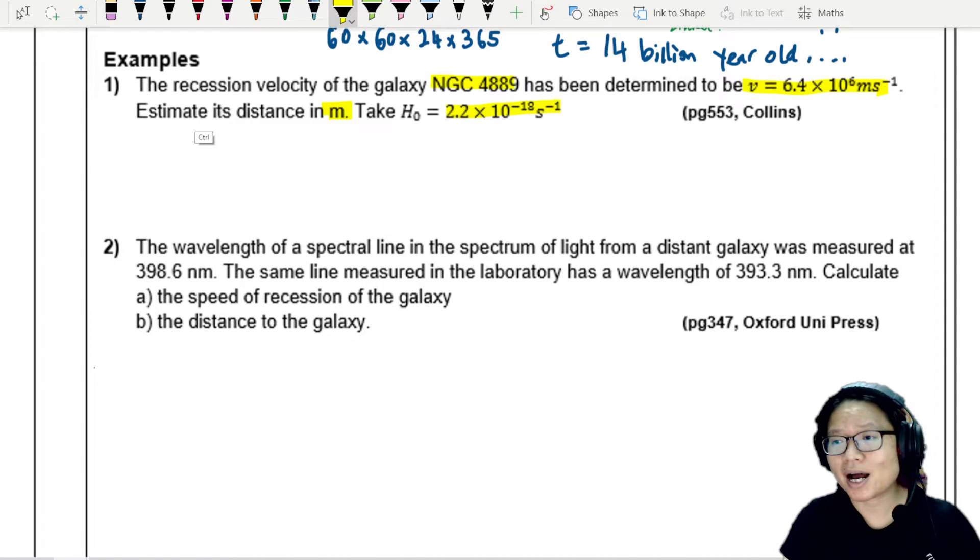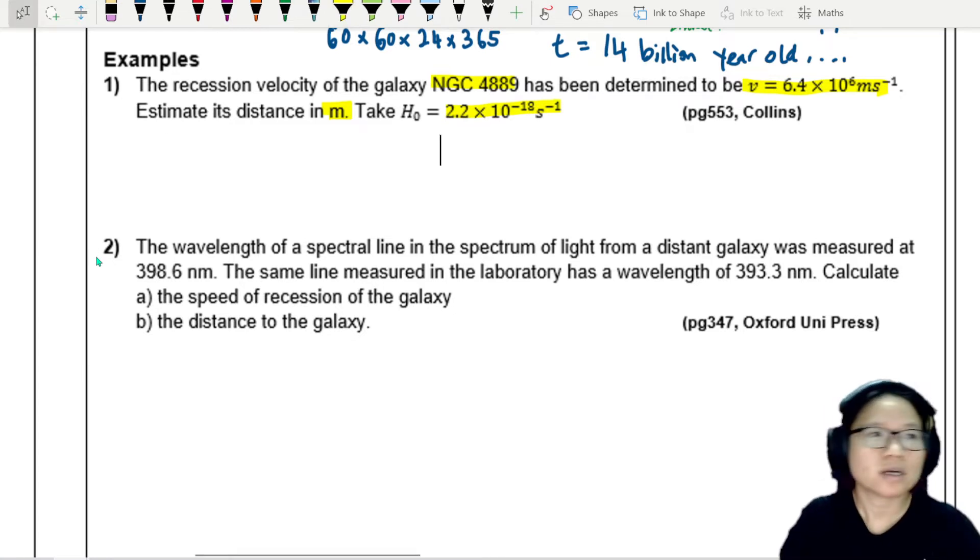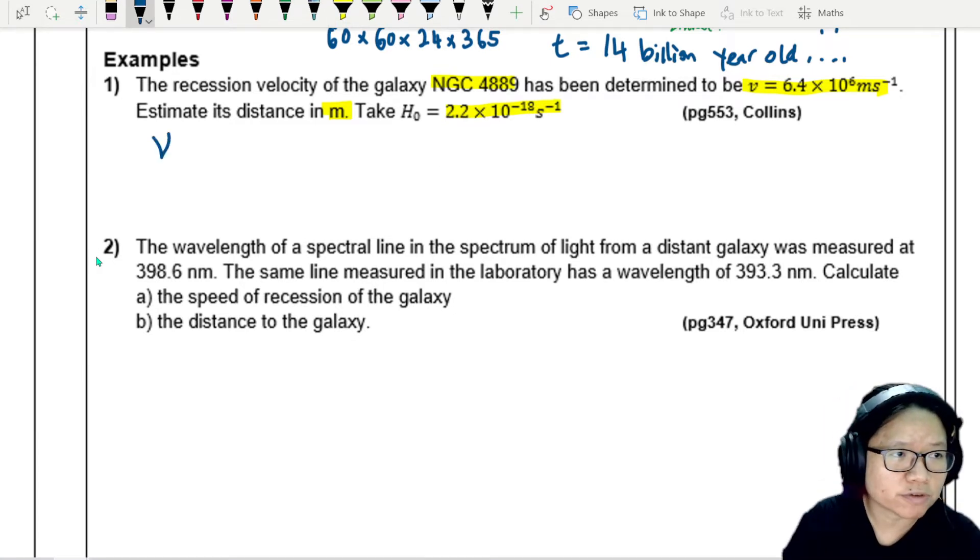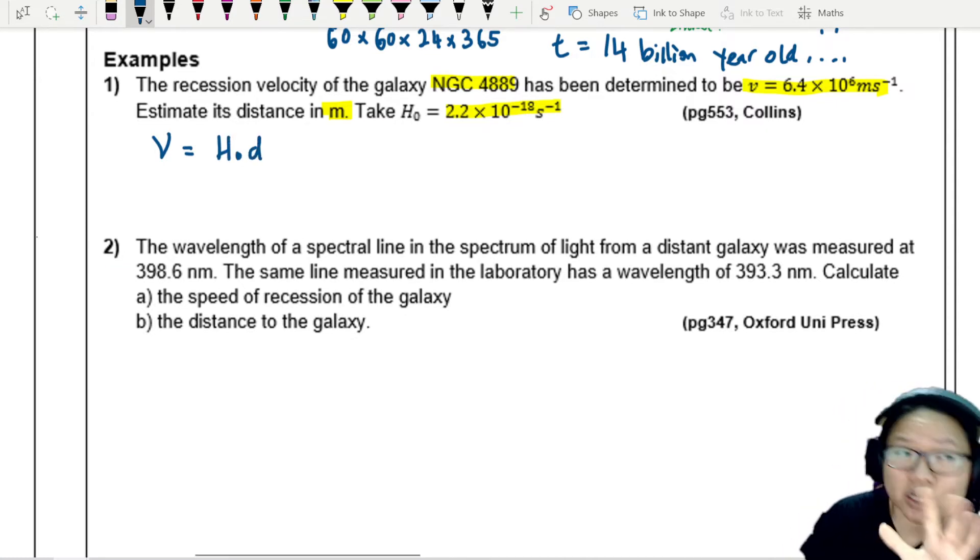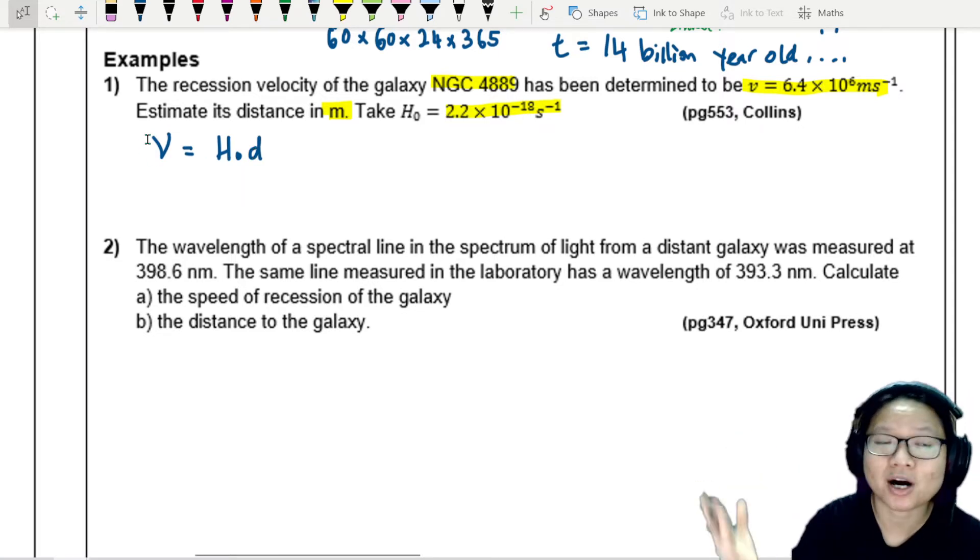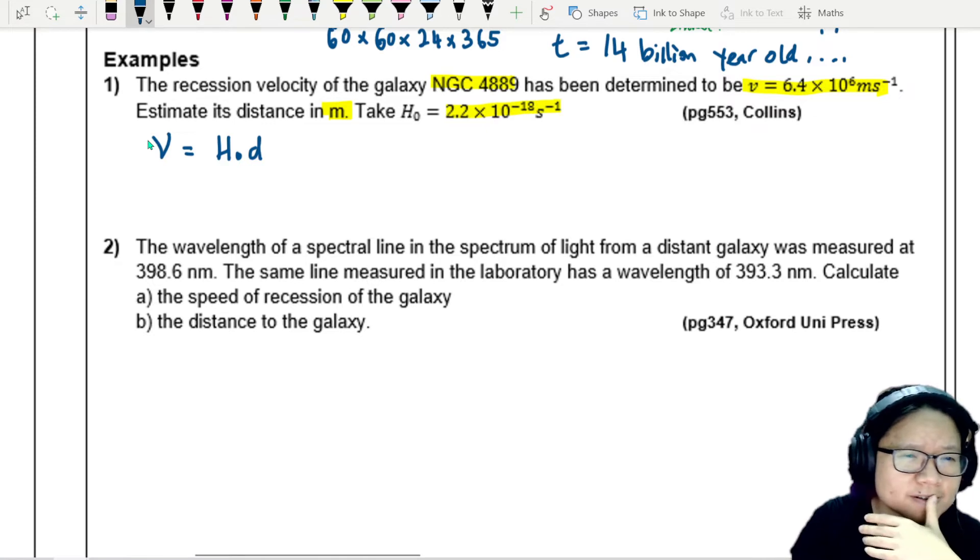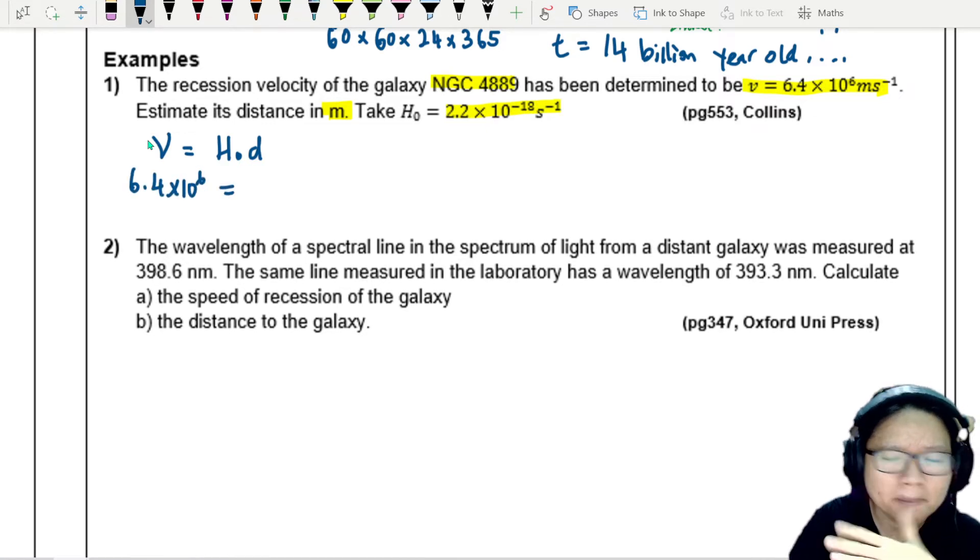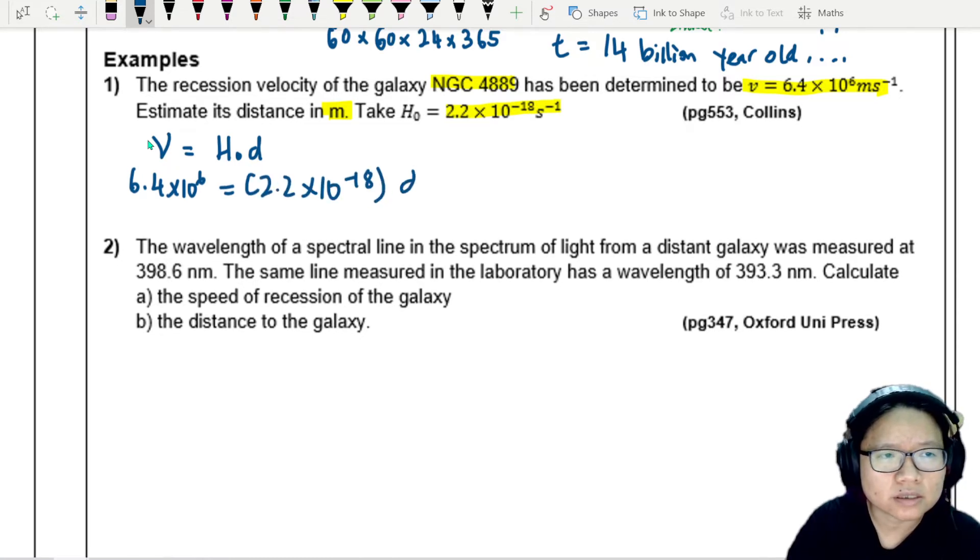Let's write down the Hubble's equation. Recession velocity equals H naught times D, because the further away the galaxy is, the greater the D, directly proportional to the recession speed. That is your Hubble's law. We're going to just put it in, straightforward, plug and pay.